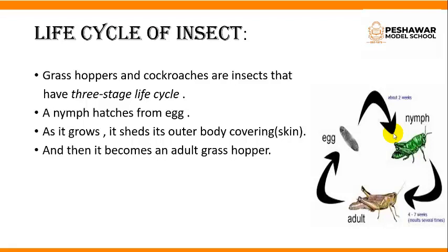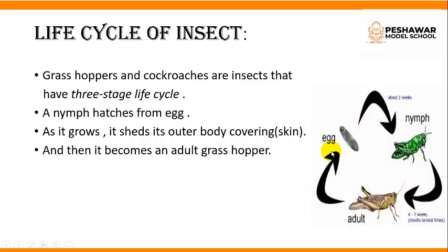Now the life cycle of insects. Grasshoppers and cockroaches are insects that have a three-stage life cycle. Grasshoppers lay eggs, then a nymph hatches from the egg. The nymph looks like the adult grasshopper but does not have wings. As it grows, the nymph sheds its outer body covering — it sheds its skin. Then it becomes an adult grasshopper. So eggs change into the nymph, and when the nymph sheds its outer body covering, it becomes an adult grasshopper.